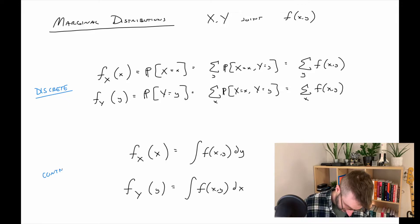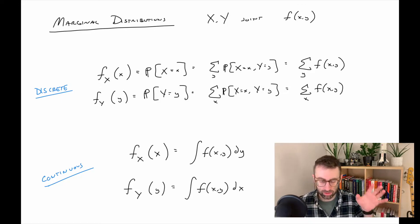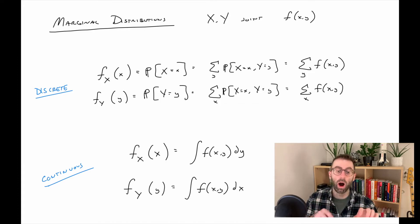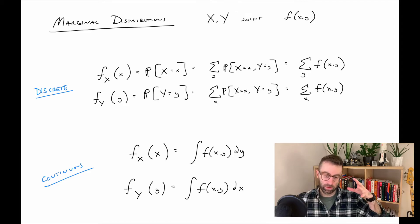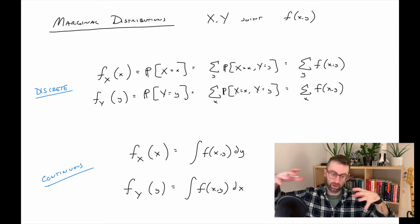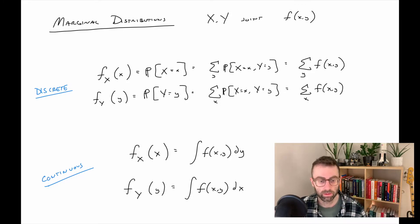And then in the continuous case, instead of a summation, you're doing an integral. To get the marginal of X, you need to integrate out Y and vice versa. So that's going from the joint distribution, seeing how everything is distributed together, to saying no, I want to isolate and just look at the distribution of one random variable at a time. But to get there, you have to consider how the other variable is distributed.